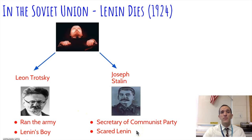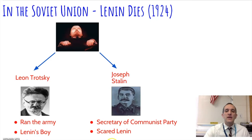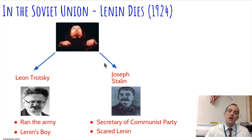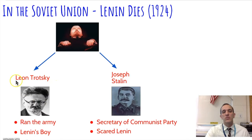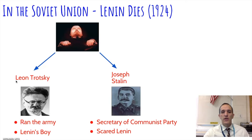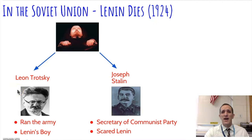Stalin was the secretary of the Communist Party, controlling who got hired and fired. He gained control of the Bolsheviks and became leader of the Soviet Union. He then kicked Trotsky out of the party; Trotsky moved to Mexico, where he was eventually assassinated — waking up one morning with an ice pick through his eye — by Communist Party spies working for Stalin.